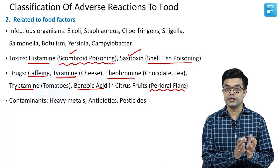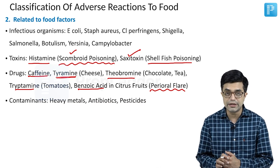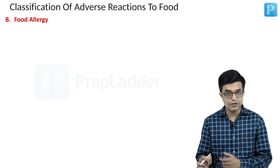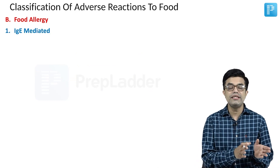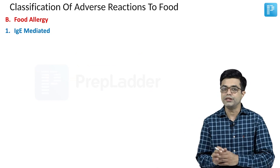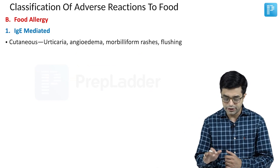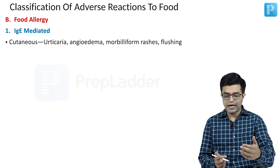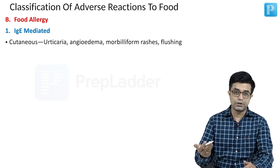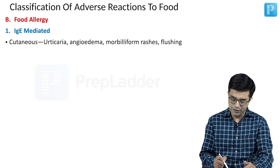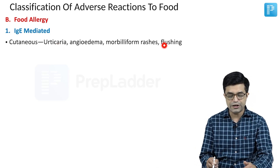This concludes the first category: food intolerance. The second category is immune-mediated — we call them food allergies. Food allergies can be either IgE-mediated or non-IgE-mediated. In the IgE-mediated category, there are cutaneous reactions including urticaria, angioedema, morbilliform rash, and flushing.